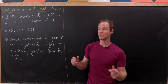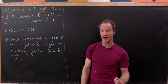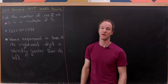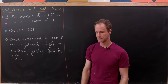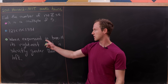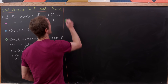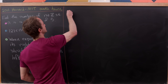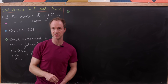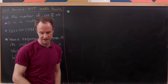Our last condition is that when n is expressed in base eleven, the rightmost digit is strictly greater than the leftmost digit. I've color-coded the conditions and I'll try to use that color coding as we apply them. So here we've got our green condition, which is this third condition.